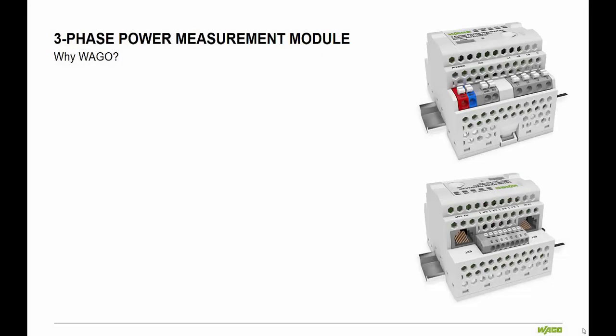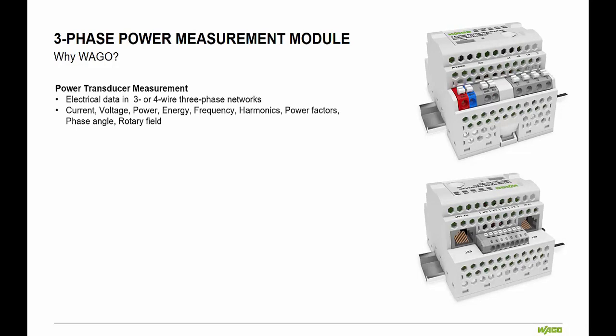Why should you consider using the Wago three-phase power measurement module? First, the module allows for power transducer measurement for electrical data in three- or four-wire three-phase networks, monitoring current, voltage, power, energy, frequency, harmonics, power factors, phase angle and rotary field.